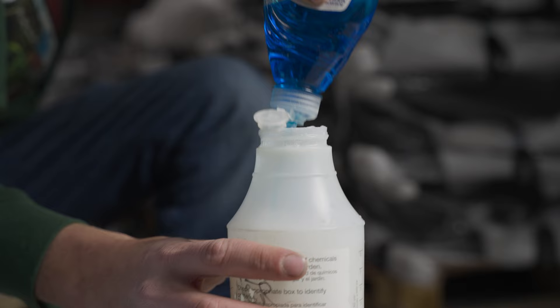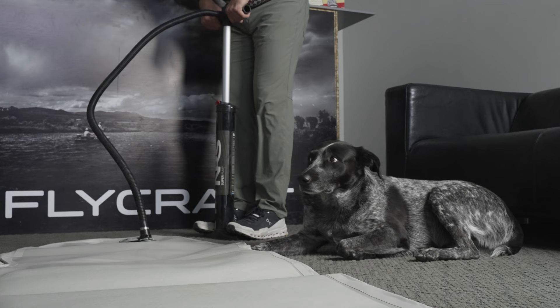Fill the spray bottle with a mix of water and dish soap. The first step is to inflate your floor to 0.5 bar.